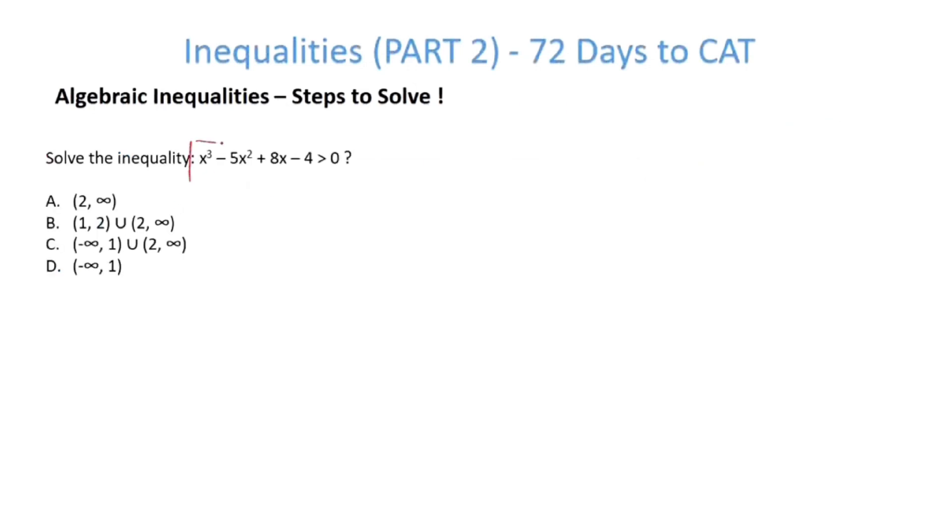Solve the inequality. So, now I have a cubic expression here. The way to go about cubic is just put some of the common numbers. For example, 1, 0, minus 1. See if one of them satisfies. Let's put 1 here. 1 minus 5 plus 8 minus 4. Jackpot. 9 minus 9 is equal to 0. So, one root is definitely 1.